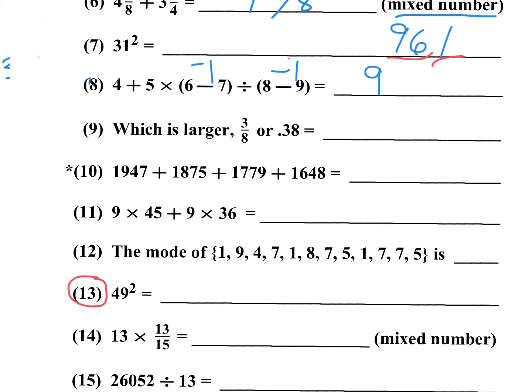Number 9, which is larger, 3 eighths or 0.38? 3 eighths is 0.375. 3 eighths is like 3 eighths. So yeah, 0.38 is larger. So just write 0.38.